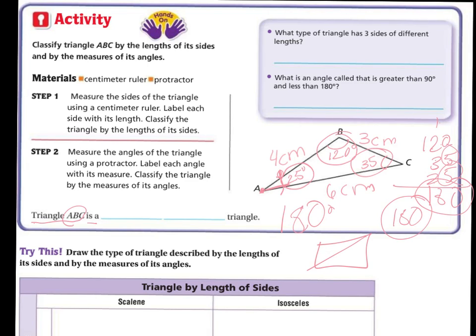Alright so the triangle ABC is what kind of triangle? Well it has one obtuse angle so I'm going to say it is an obtuse triangle. My other classification if I'm looking at the lengths, this one's four centimeters, three centimeters, and six centimeters. They're all different segments, therefore it is a scalene triangle.